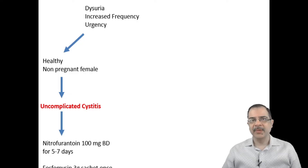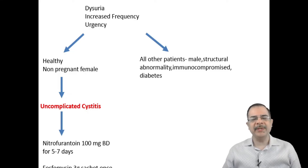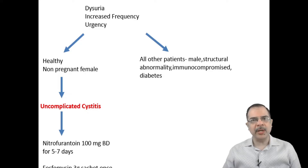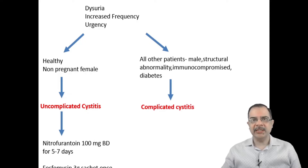Side effects of nitrofurantoin include headache and possibly some breathlessness; it can cause pleural effusions as well. Fosfomycin may lead to diarrhea episodes. If these symptoms of cystitis are present in all other patients — for example, in males, or those having some structural abnormality of the urinary tract, immunocompromised patients, or patients with diabetes — it will be considered as complicated cystitis.